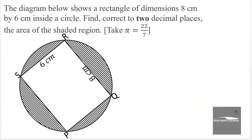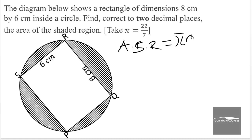The third question: the diagram shows a rectangle of dimensions 8 cm by 6 cm inside a circle. Find, correct to 2 decimal places, the area of the shaded region. The area of the shaded region equals the area of the circle, pi r squared, minus the area of the rectangle, length times width. We need to determine the radius of the circle.